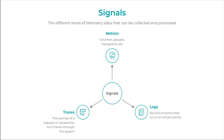Metrics could be counters, gauges, histograms, etc., used to quantitatively represent the characteristics of the system at a point in time. Logs are records of events that occur within the system. And traces represent the journey of requests or a transaction as it travels through the different processes or services in the system.